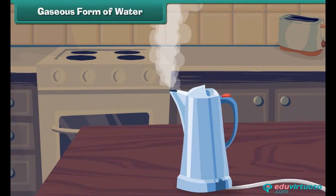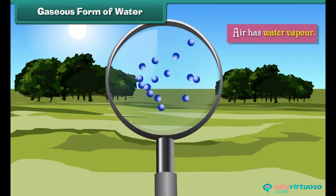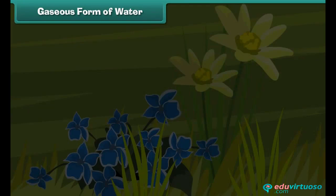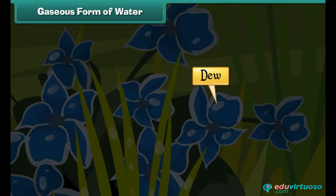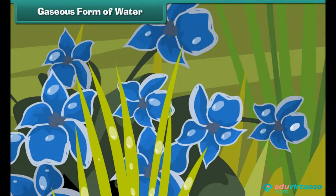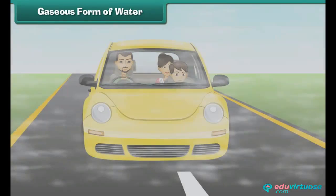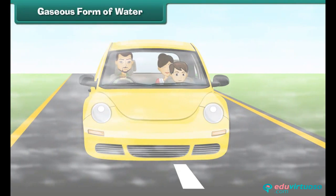When water is heated it turns into water vapor. Water vapor is an example of water in gaseous form. Water vapors are always present in the air around us. On cold nights the water vapors present in the air cool down and become water droplets called dew. We see dew drops on flowers and leaves on cold winter mornings. Sometimes during severe cold conditions these water droplets remain in the air and form fog.